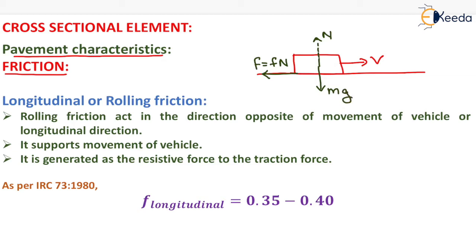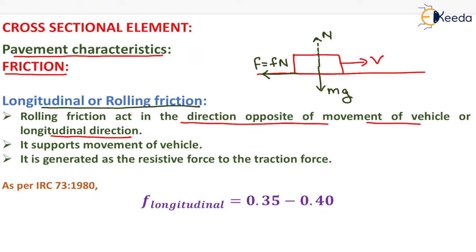Now in friction, the first type is longitudinal or rolling friction. Rolling friction acts in the direction opposite to the movement of the vehicle, that is, in the longitudinal direction. So longitudinal or rolling friction is generally acting in the direction opposite to that of movement, as shown here.